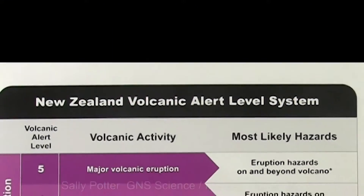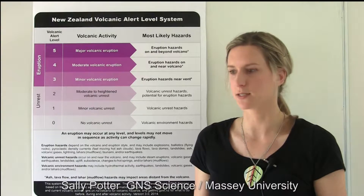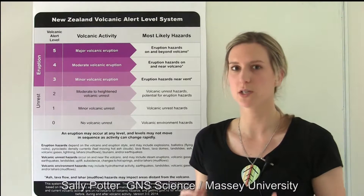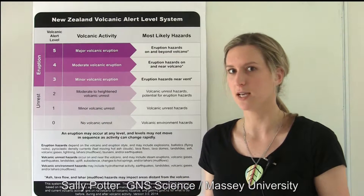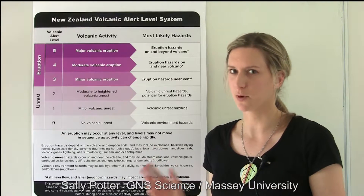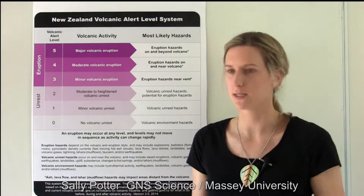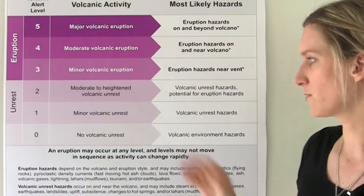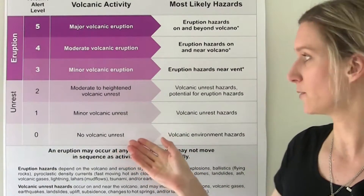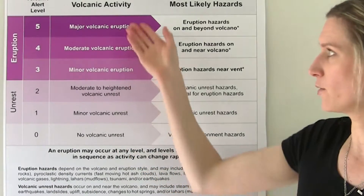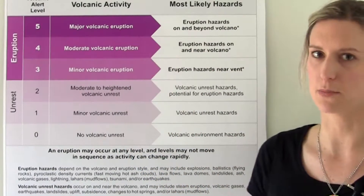This table is the Volcanic Alert Level System for New Zealand. We use it to communicate the level of activity at each of our volcanoes to everybody who needs to know. It ranges from zero, or no volcanic unrest, right through to five, or major volcanic eruption.